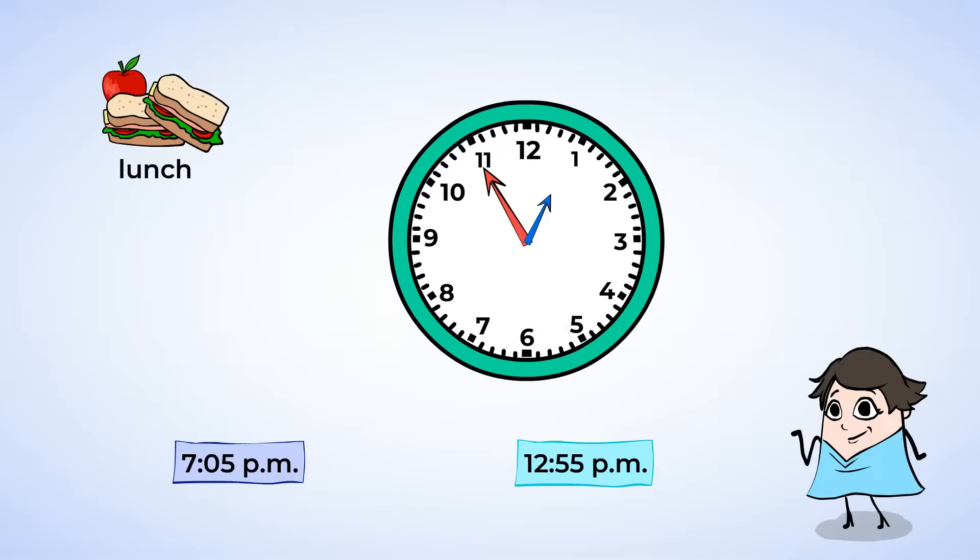Next is lunchtime. This hour hand is close to the 1, but not quite. Aha. That means that the hour is still 12. The minute hand is on the 11. If you forget how many minutes that is, don't worry. You can skip count starting from the 1. 5, 10, 15, 20, 25, 30, 35, 40, 45, 50, 55. So lunch is at 12:55. And we know the choice that says 12:55 p.m. is correct, because 12:55 is in the afternoon, so p.m. makes sense.